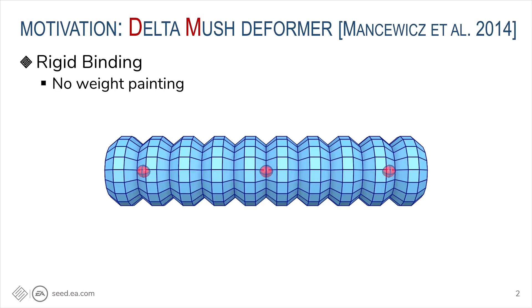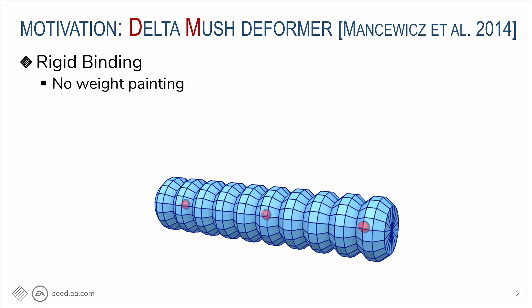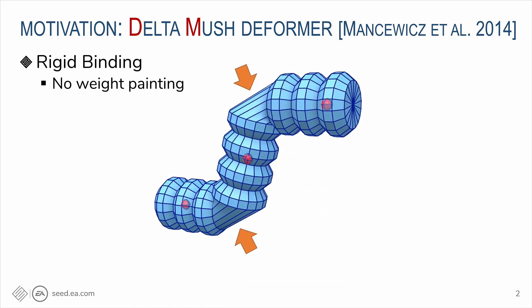First, to set up the background, I'll talk about Delta Mush. It's a quite popular tool in industry. The idea is to reduce authoring cost by avoiding weight painting. For example, if we have three joints drawing red color here and we just do rigid binding, the geometry will break when we animate the joints.